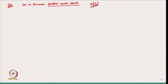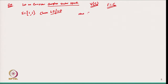A complex vector space means a vector space defined over the field of complex numbers ℂ. Instead of the field of real numbers, we take the field as the set of complex numbers. So the scalars are complex numbers.